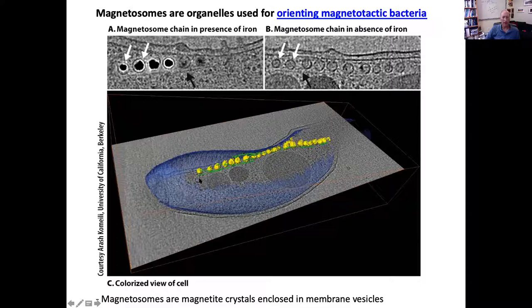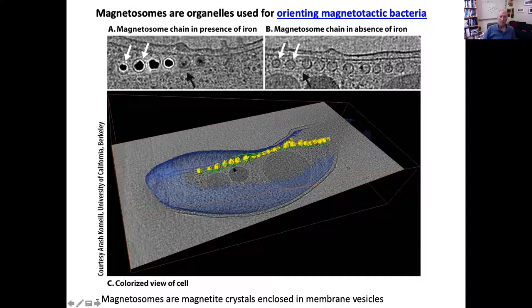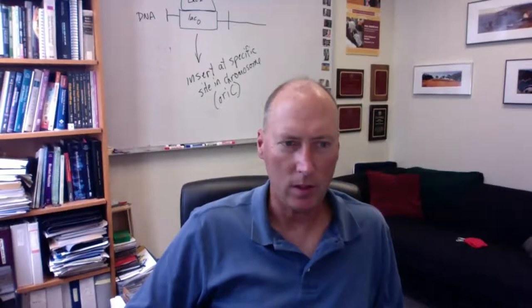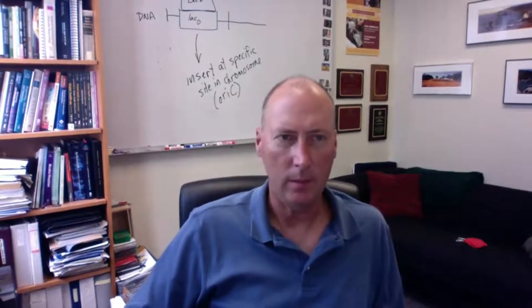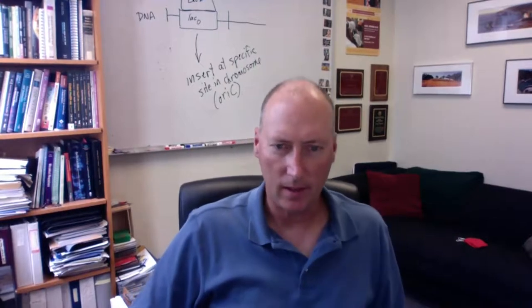And I have put some of these papers that these images are derived from on the Camino site. You can find them under the folder on magnetotactic bacteria in the scientific papers folder. And I'm actually going to ask you to read some of those papers for next week, but I'll tell you more about that in class. So anyway, I want to show you what the magnetotactic bacteria do, but I think I have to switch my screen sharing here.